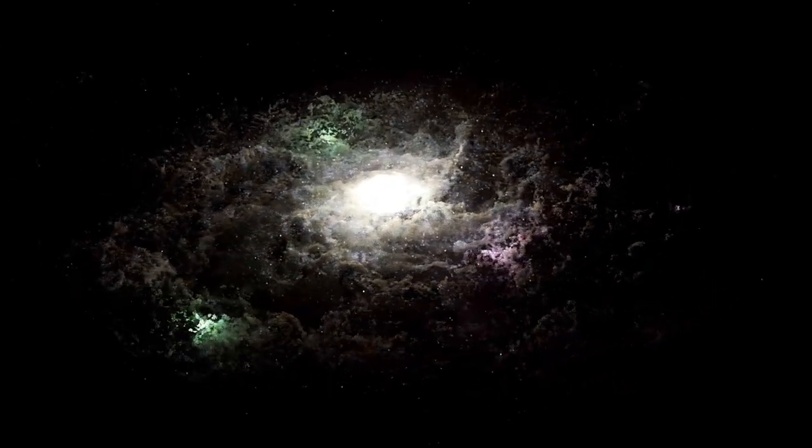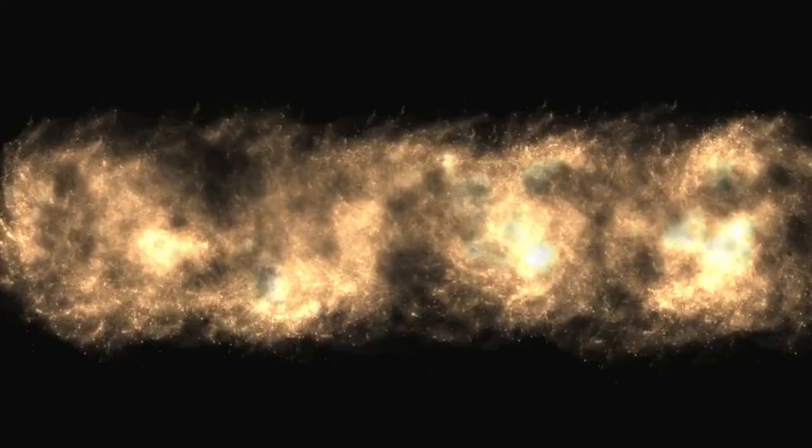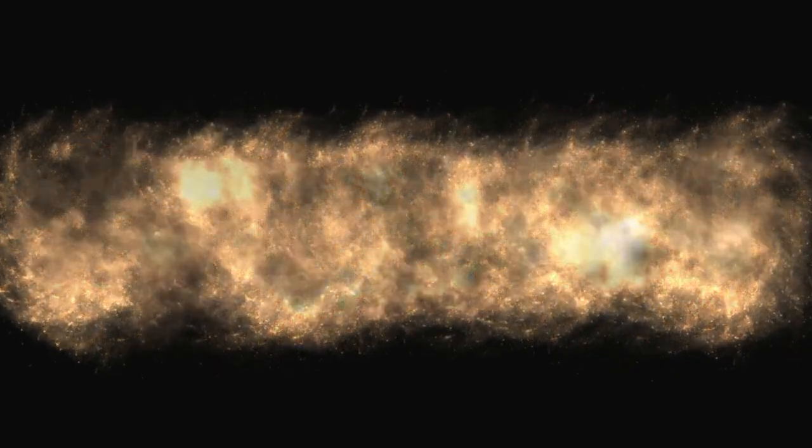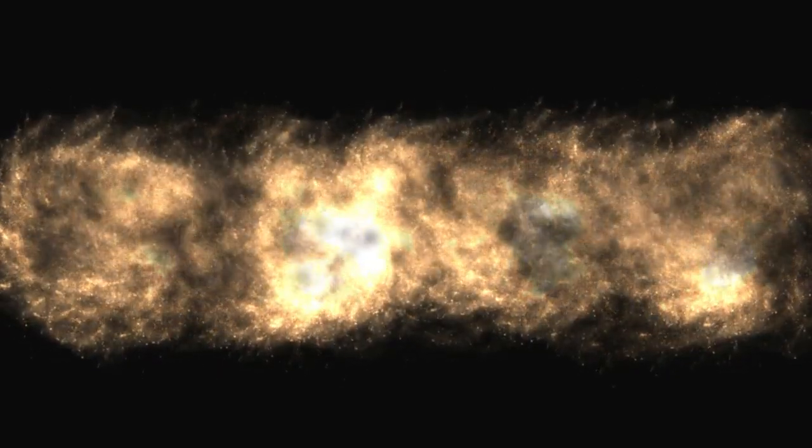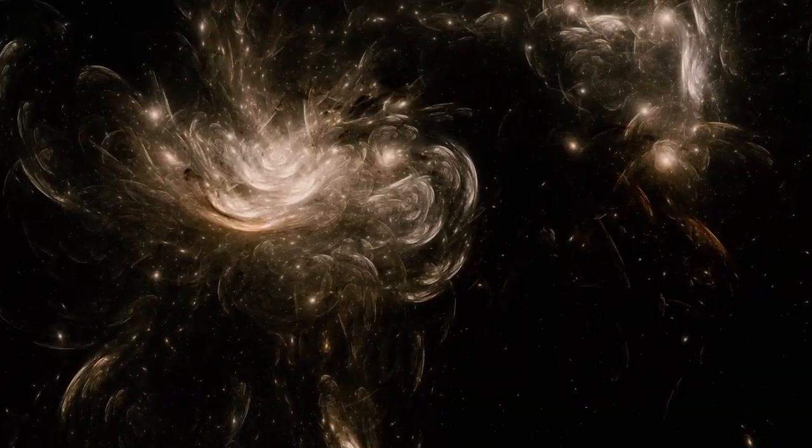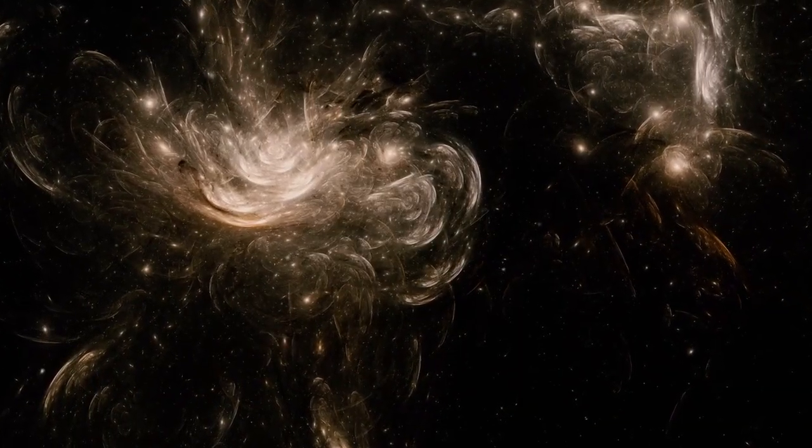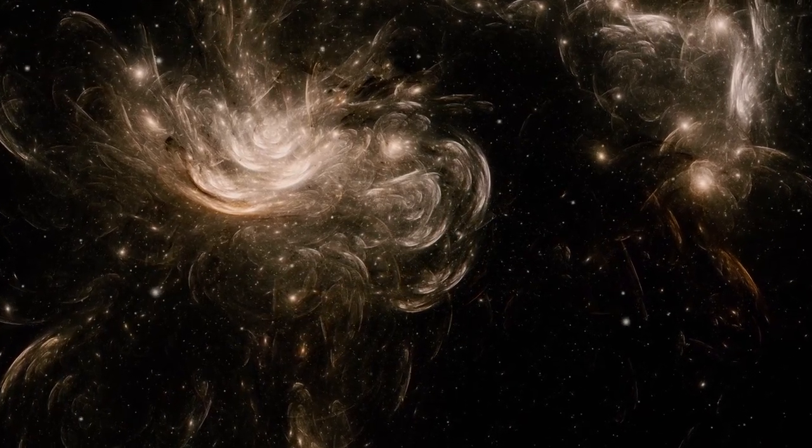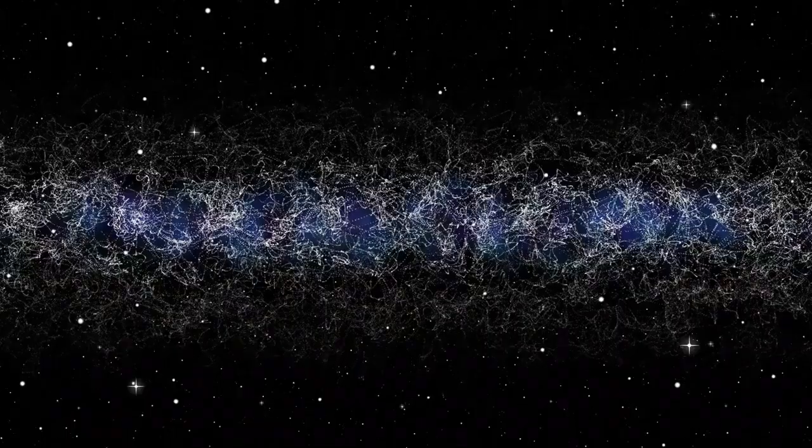What makes HIP 65426 b particularly remarkable is its immense size, about 12 times the mass of Jupiter, and its vast distance from its host star, which made it easier to capture a direct image. But direct imaging isn't just about producing stunning visuals. It's about deciphering the origins of exoplanets and assessing their potential for supporting life. These images could yield crucial insights into how planets form and the nature of their atmospheres.